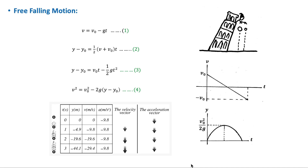In this video I'll discuss free falling motion and projectile motion. Around the year 1609, Galileo studied and experimented with the acceleration of fallen objects by dropping various objects from the Leaning Tower of Pisa. He discovered that when air resistance is neglected, all objects fall with the same constant acceleration regardless of their mass.